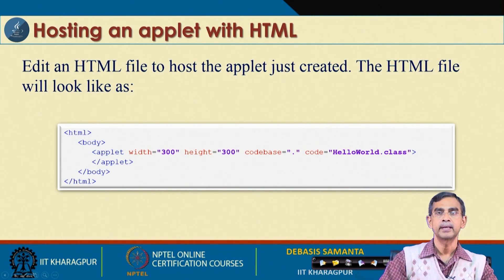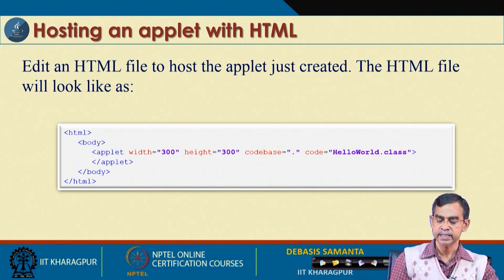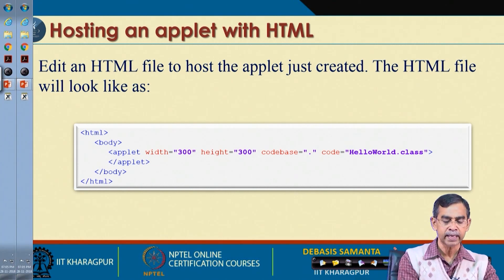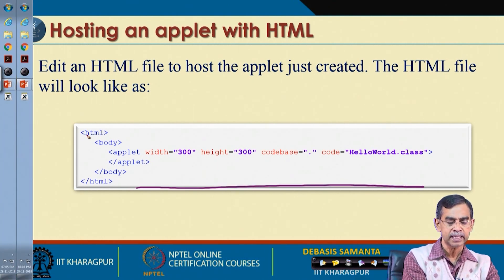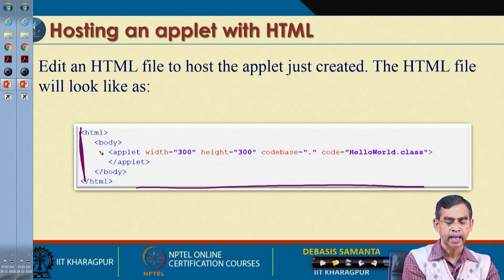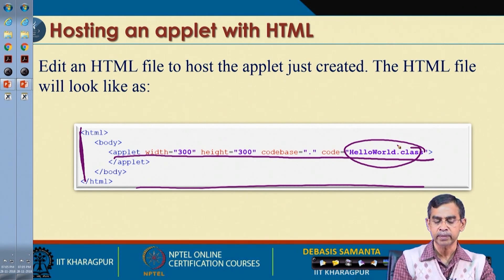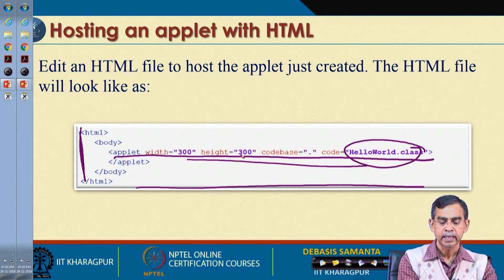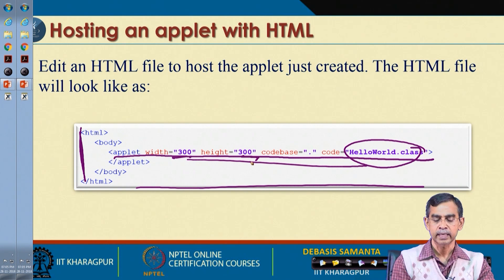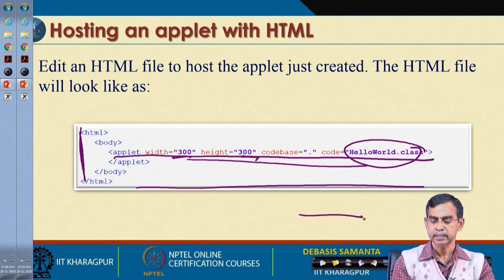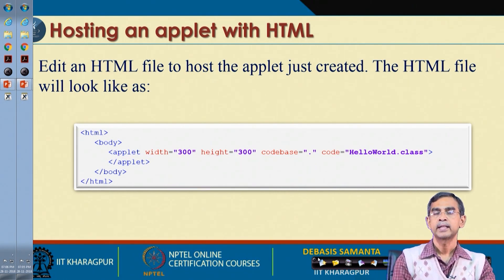Once the class file is created, it can be viewed using any browser. For example, Applet Viewer is one browser that can be used. We have to edit, save, and compile using javac, which produces HelloWorld.class. This class file needs to be embedded into an HTML file. The HTML file uses the applet tag with the code attribute set to HelloWorld.class, and the width and height set — for example, 300 cross 300 pixels.